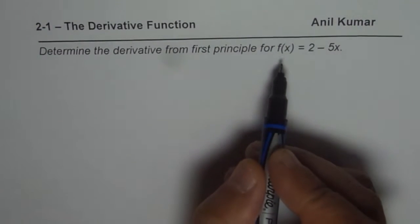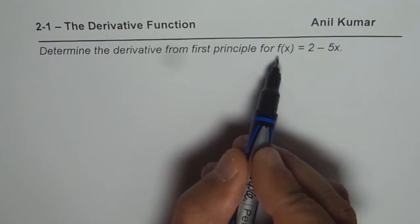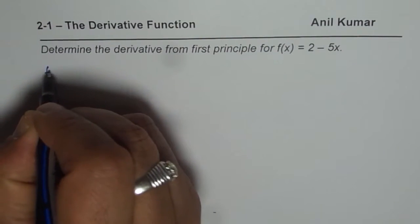I have taken all familiar functions to work with. The first one here is a linear function. So determine derivative from first principle for f of x equals 2 minus 5x. As you know, to find derivative,